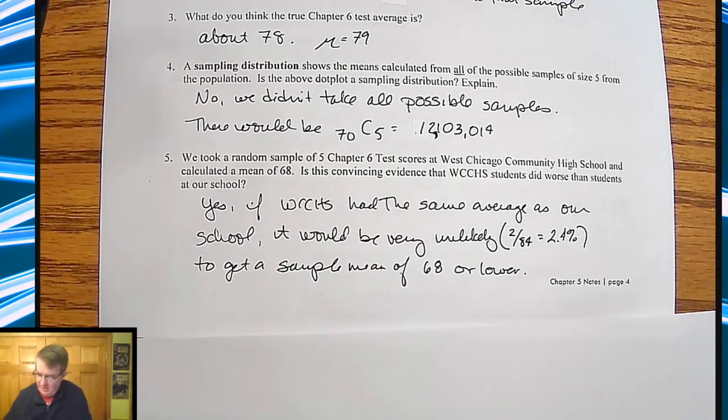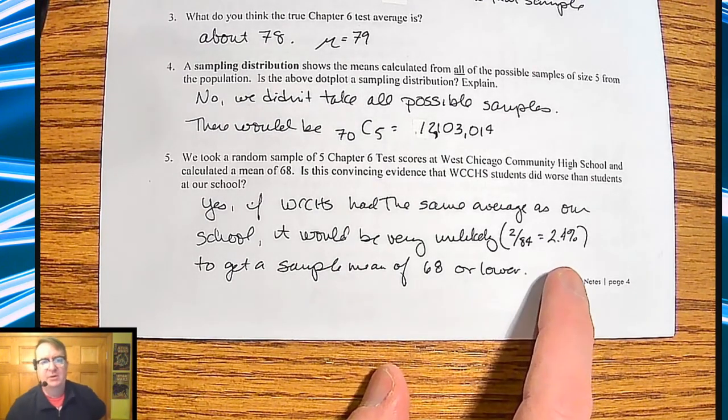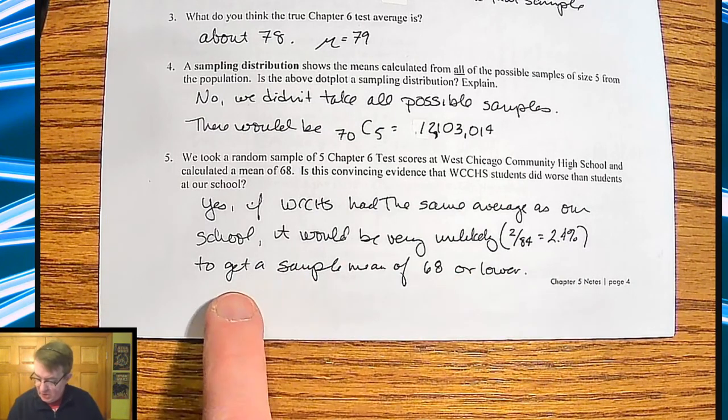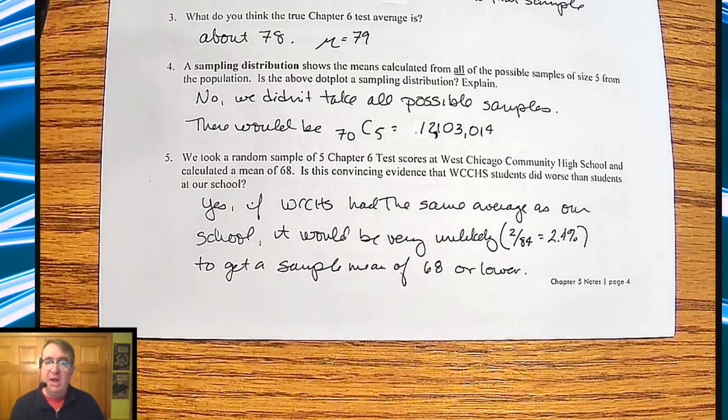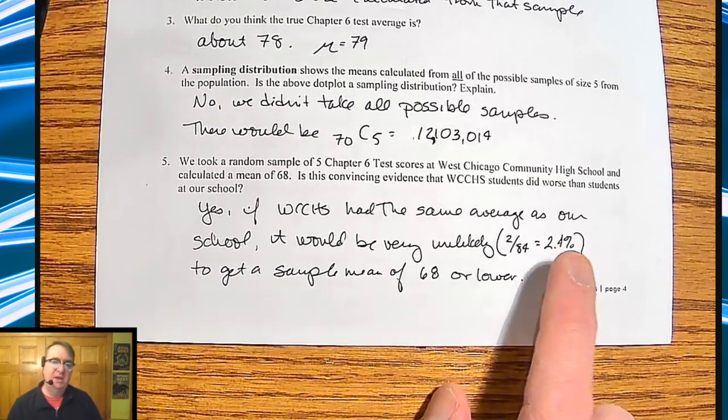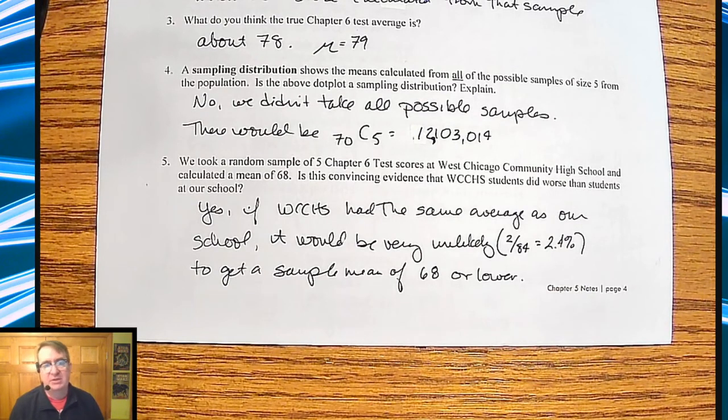And so the question is, is that convincing evidence that this sample did worse than the sample that we had above? And so if you come back here, the answer is yes, because two out of 84 is a sample of 2.4 percent. And that's less than our 5 percent kind of benchmark that we've talked about. And so we would say, yeah, if they had an average, if the average was the same as what we had, this would be very unlikely because we'd only get a 2.4 percent chance of that actually happening. So we would say, yeah, that's unlikely that the sample mean is actually 68 percent or lower if we had the same averages. So then we would say, yeah, they definitely had a lower average because otherwise we would not be seeing what we're seeing. And that's what we're setting up for the rest of the unit.